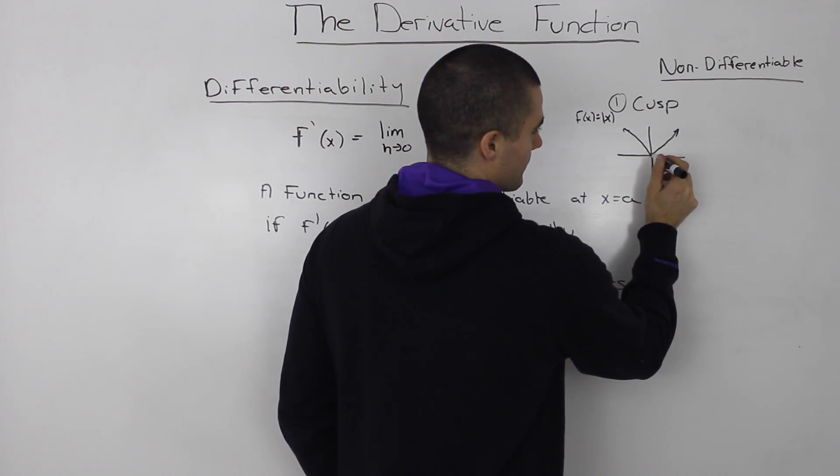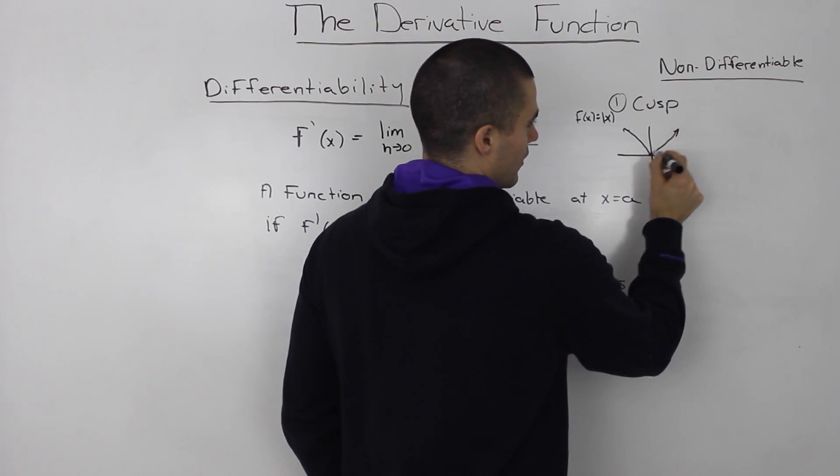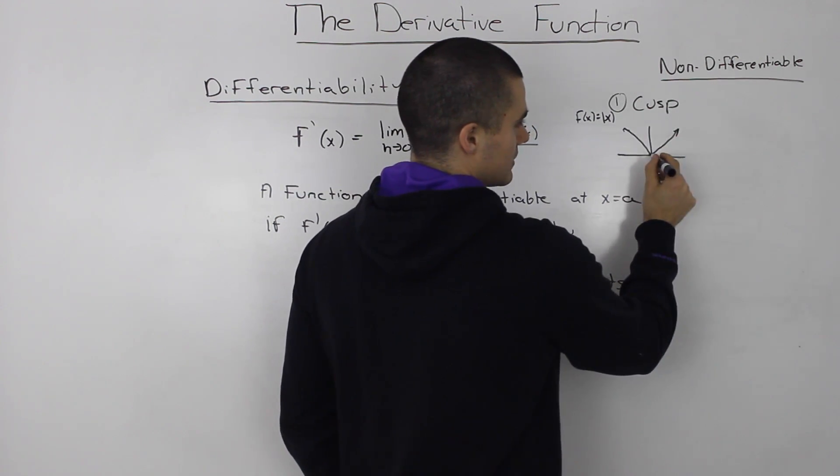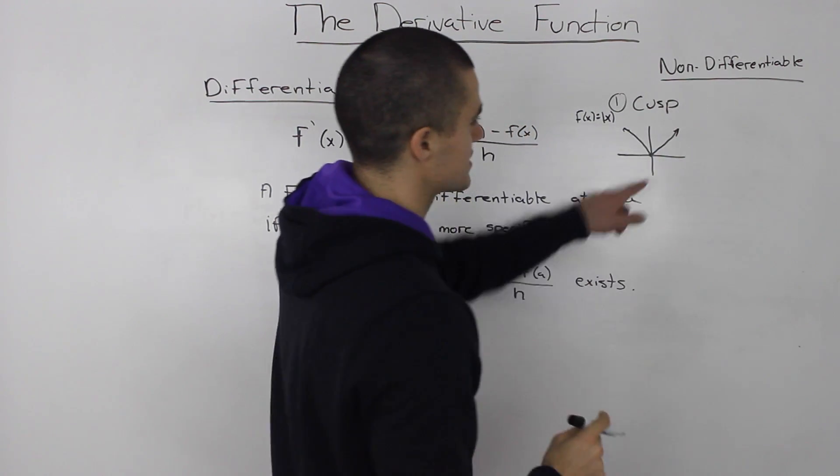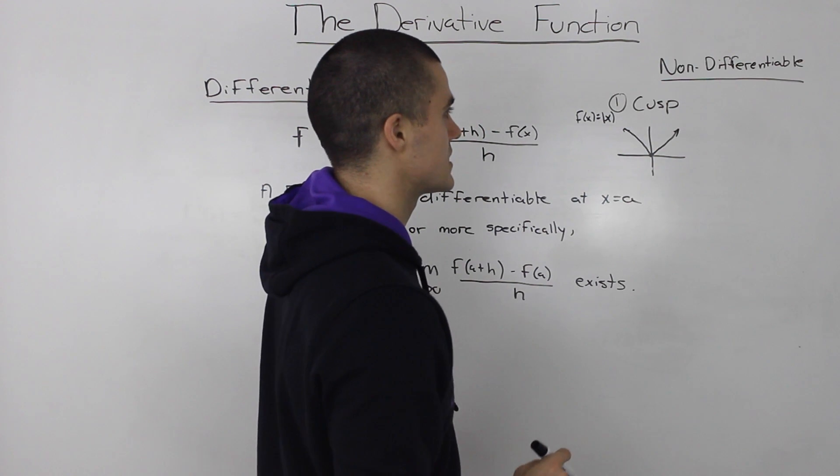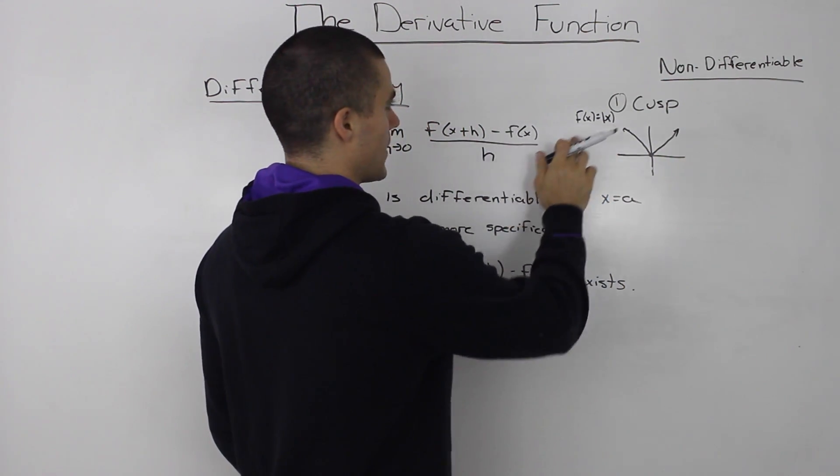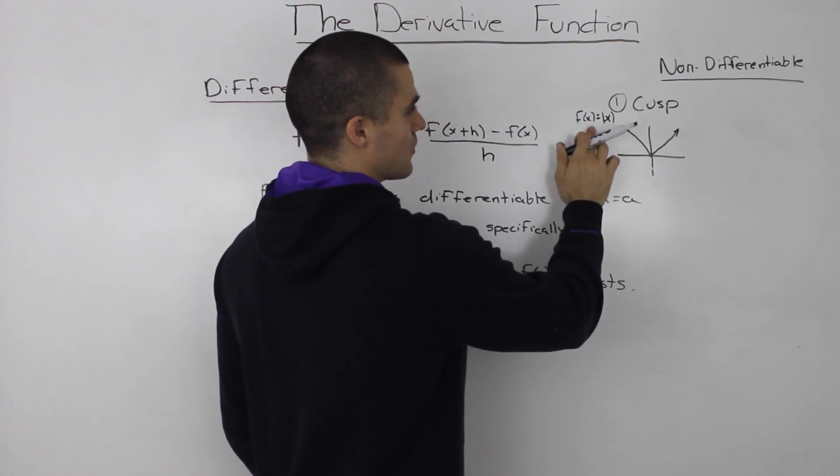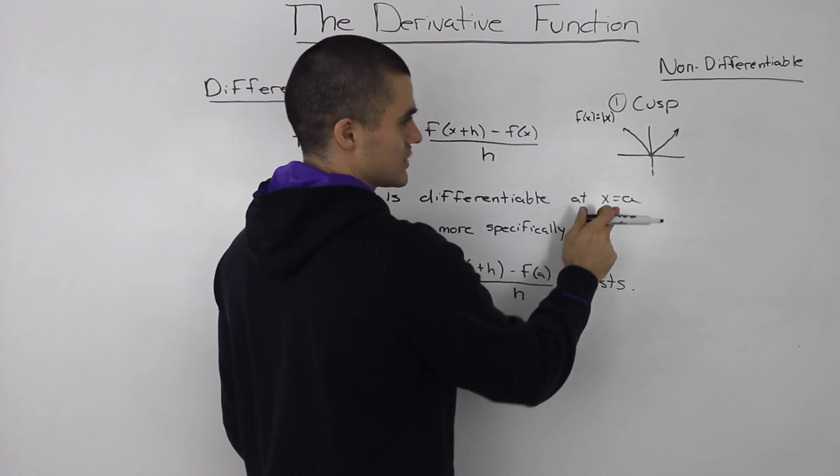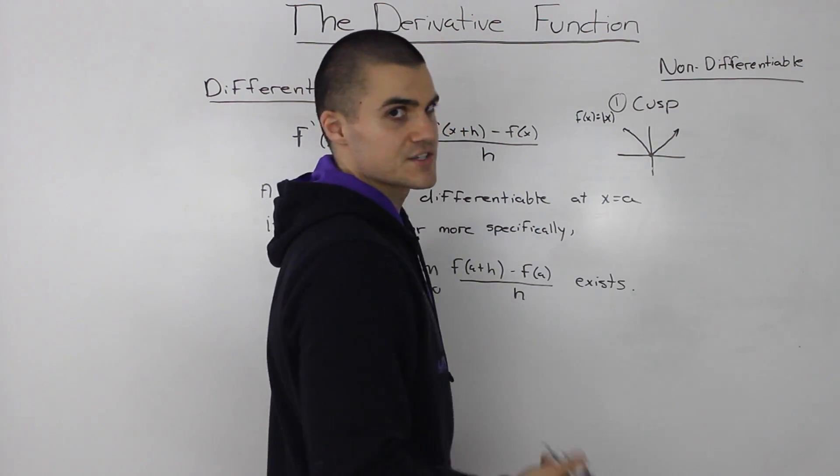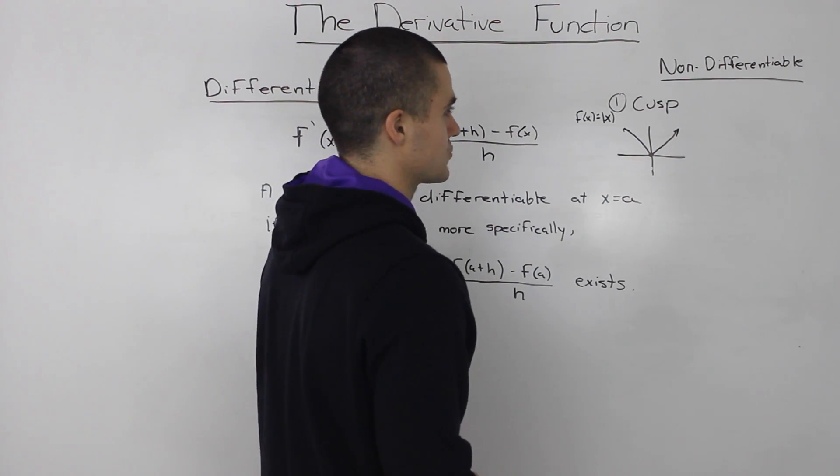Here, where the two lines meet, that's called a cusp, and it's not differentiable at that point. If you actually took the limit, if you tried to find the derivative of this function at (0,0), you would see it's not differentiable.